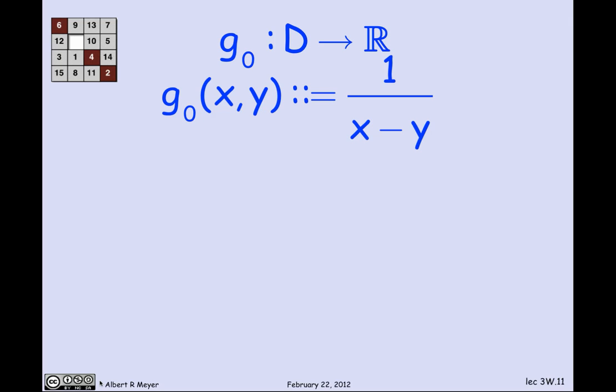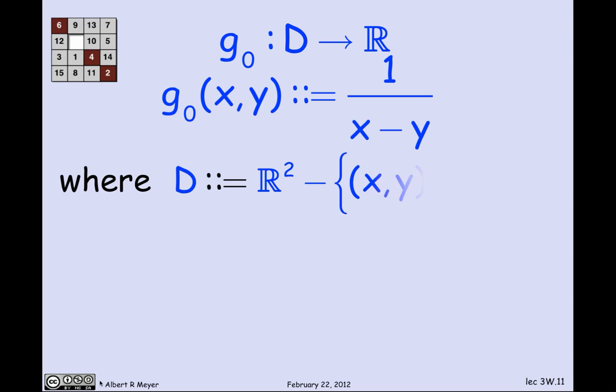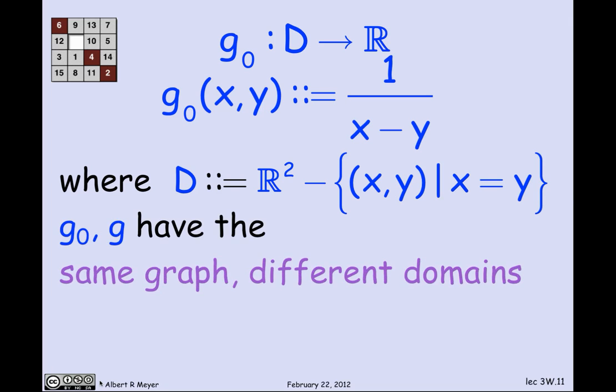Here's a slight variation: function g0 goes from some domain to the reals and has exactly the same formula, g of x, y equals 1 over x minus y. But now the domain, instead of being all the reals, is the reals except for that 45-degree line — removing the bad points. These two relations have the same graph but different domains. By removing the bad points from the domain, I'm left with a total function, g0.